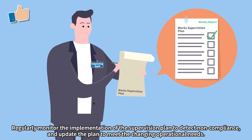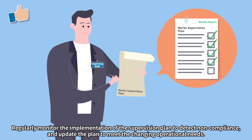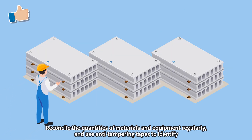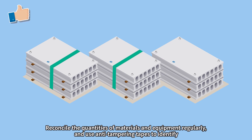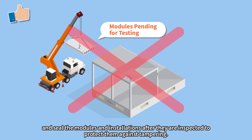Regularly monitor the implementation of the supervision plan to detect non-compliance and update the plan to meet changing operational needs. Reconcile the quantities of materials and equipment regularly and use anti-tampering tapes to identify and seal the modules and installations after they are inspected to protect them against tampering.